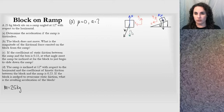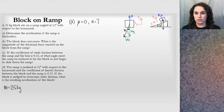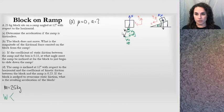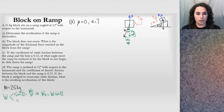The weight needs to be decomposed in this coordinate system. It has a wy component and a wx component. Based on geometry, if this is a 12-degree angle, this angle up here is also 12 degrees. The x component is the opposite leg and the y component is adjacent. So wx equals w sine 12, and similarly wy equals w cosine 12 degrees.